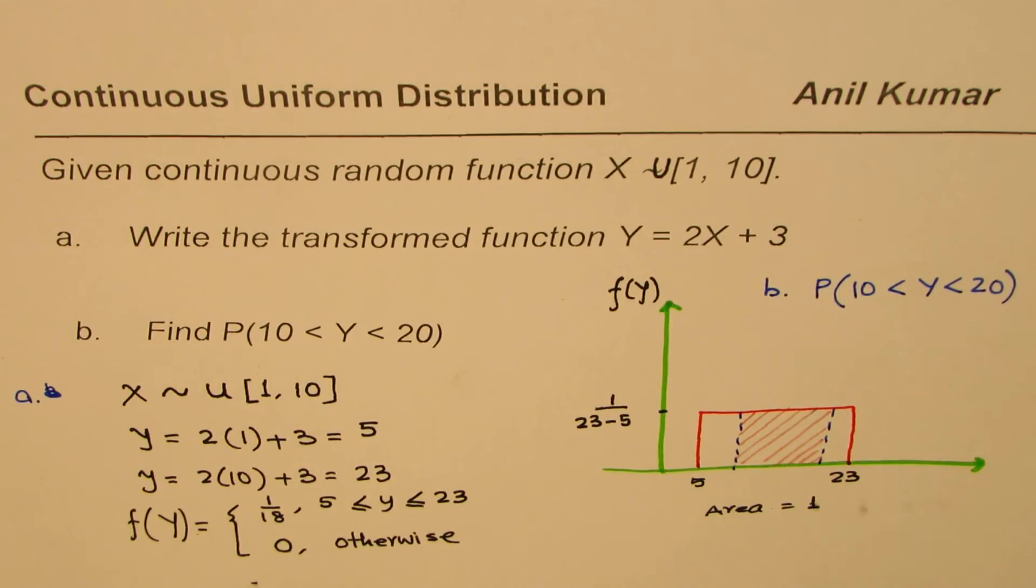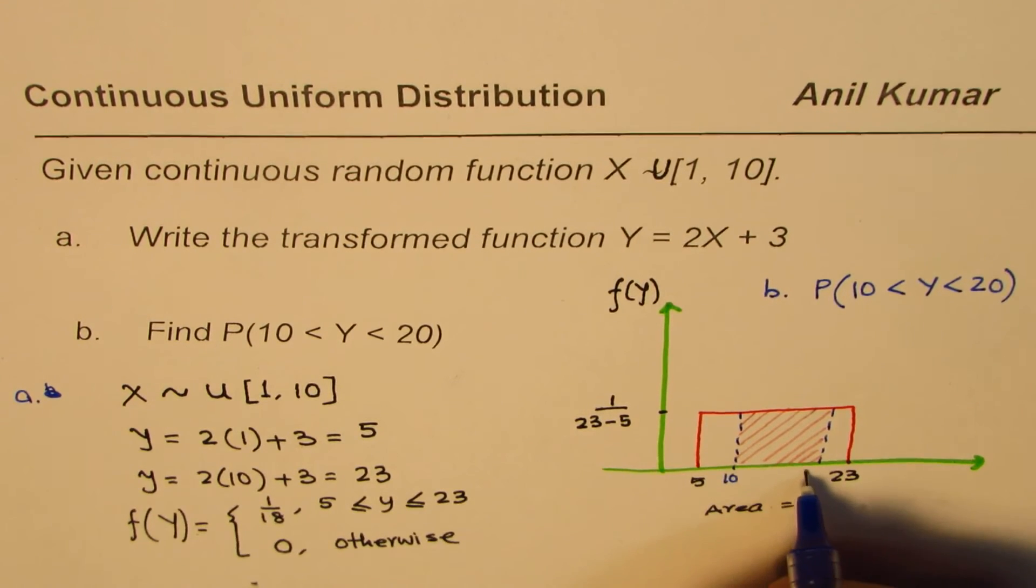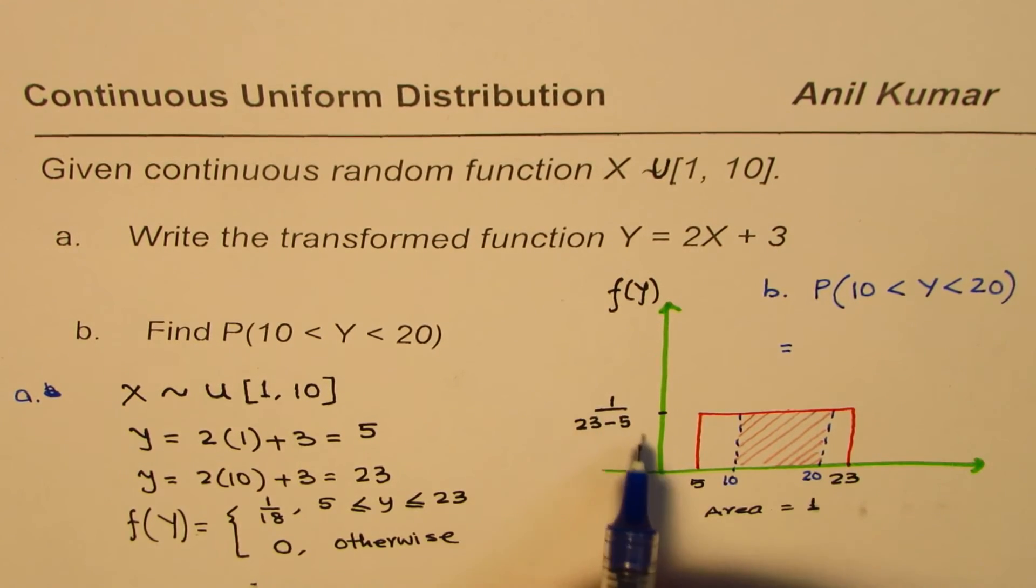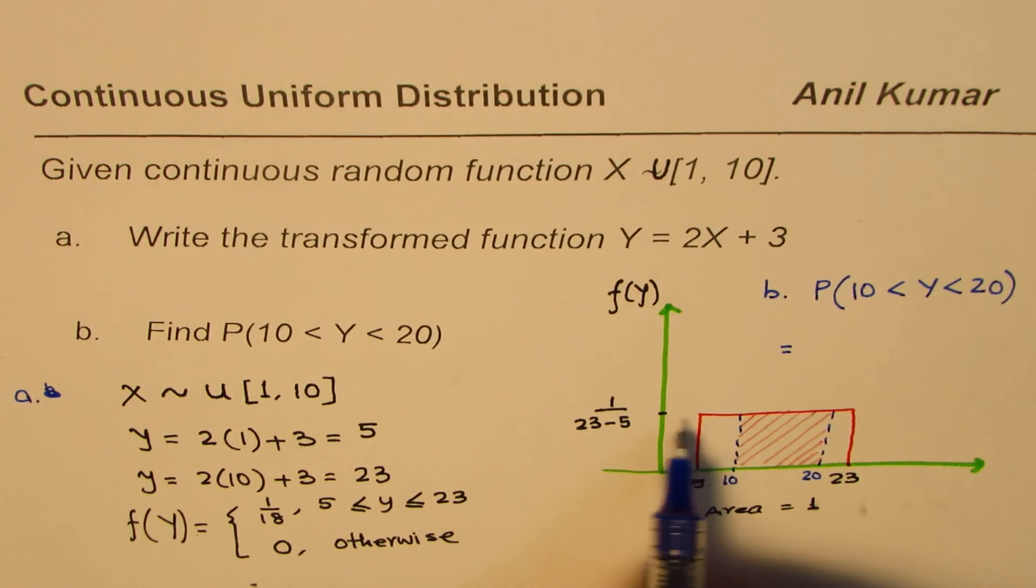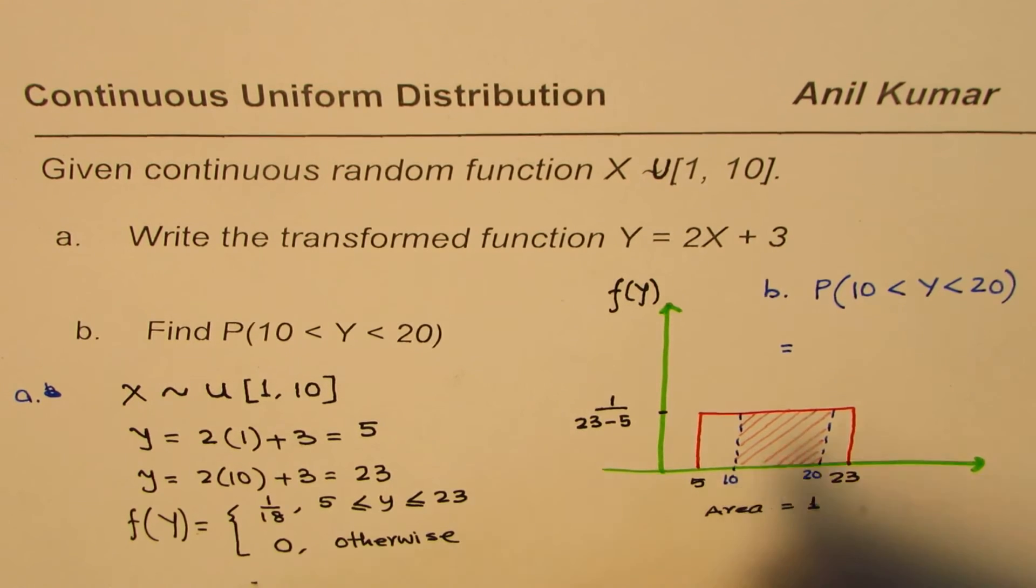So we can easily calculate this area, since we know this is 10 and this point is 20. So this probability is equal to 1 over 18, which is the height of this rectangle, and 10 minus 20 minus 10, which is 10, right?